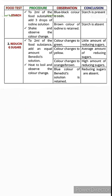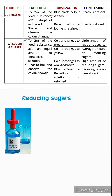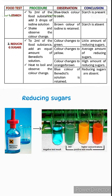Reducing sugars are tested using Benedict's solution, which contains copper 2+ ions responsible for its blue color. If reducing sugars are present, the copper 2+ ions are reduced to copper 1+ ions, causing a color change. If reducing sugars are absent, the copper 2+ ions remain and the blue color is retained.